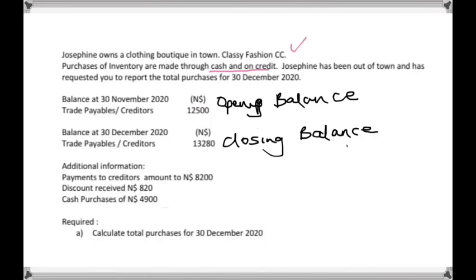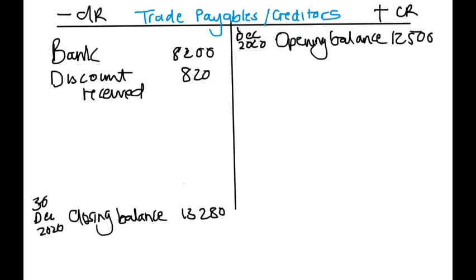Cash purchases of 4,900 will not be included in the creditors T-account because it has nothing to do with people we owe — it was paid in cash and we only deal with credit here. Now we draw up our totals blocks and enter the column with the highest amount, which is on the debit side: 22,300.